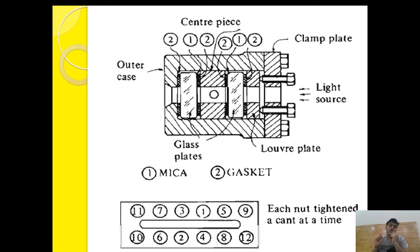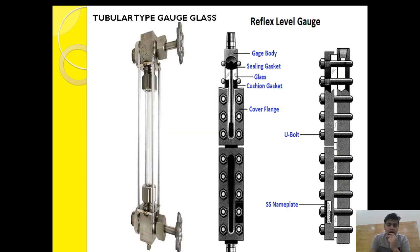The gauge glass should also be tightened at the correct torque. The normal torque is mentioned in the manufacturer's manual, so please refer to that before tightening the gauge glass. I hope in this video you have learned how the gauge glass is tightened and what safety features are provided in the gauge glass. If you have any doubts, please comment below and please subscribe to my channel.